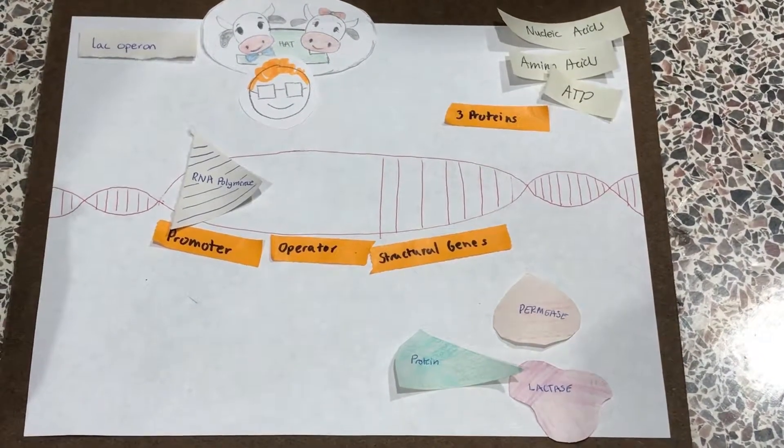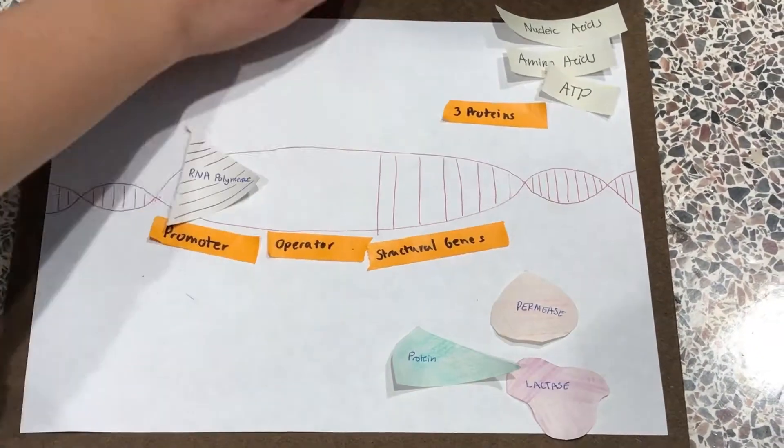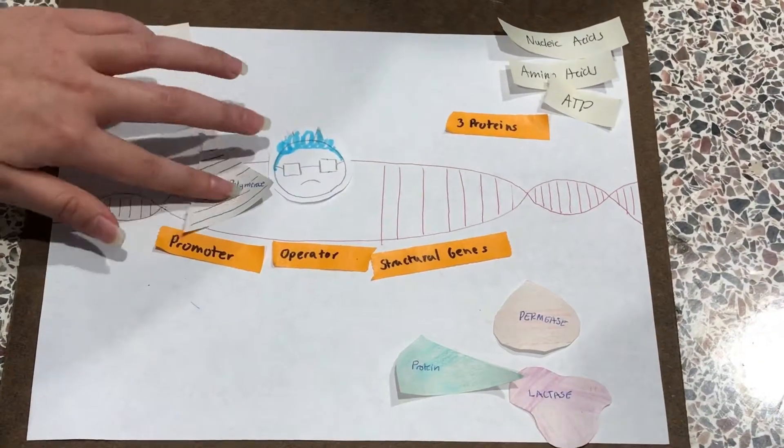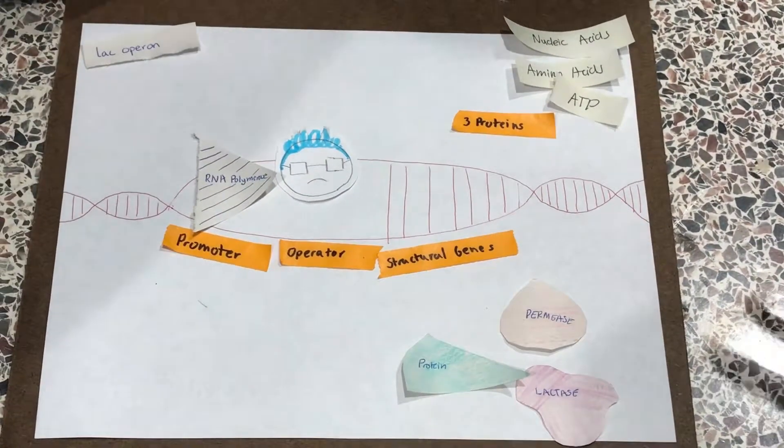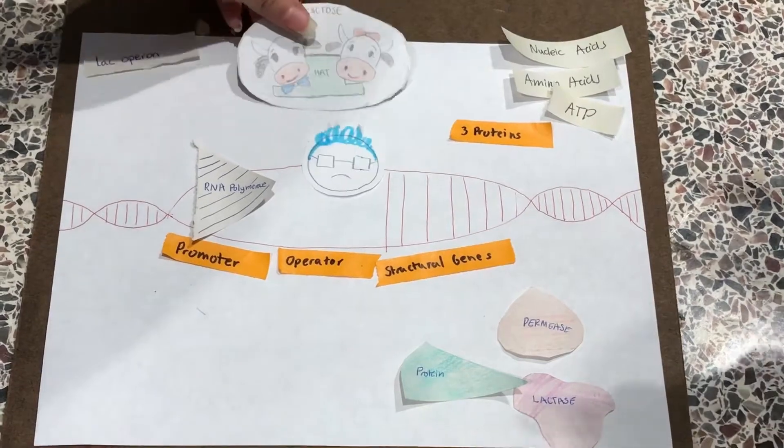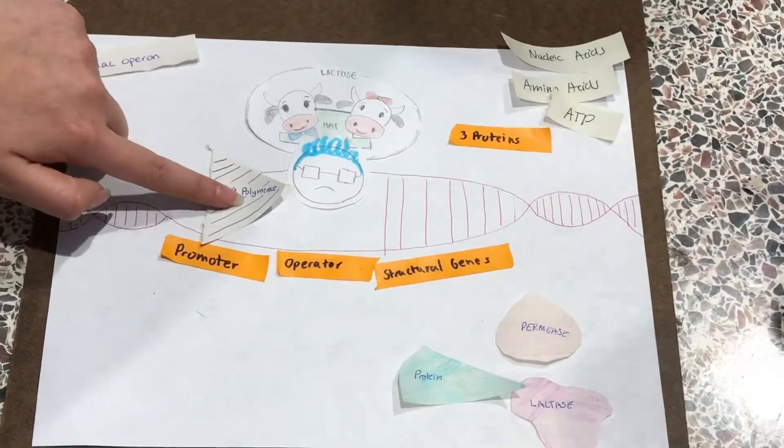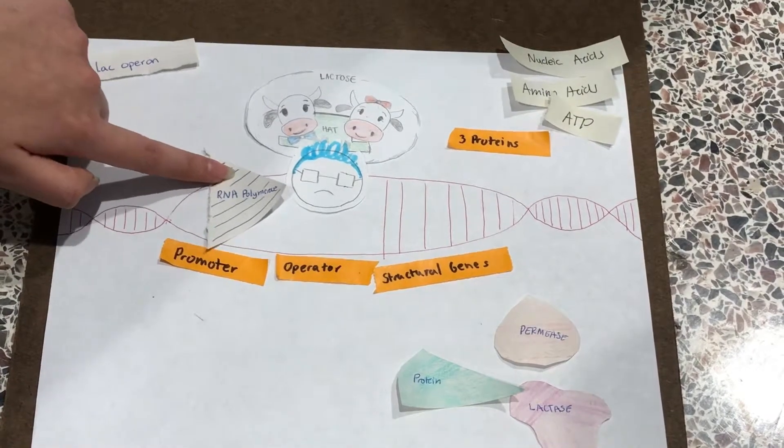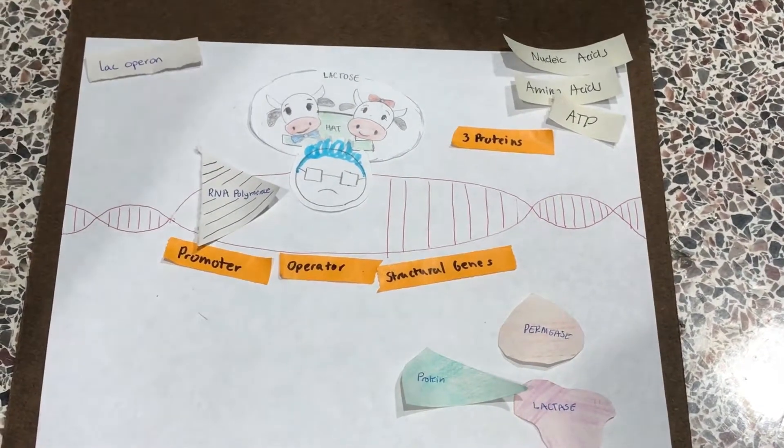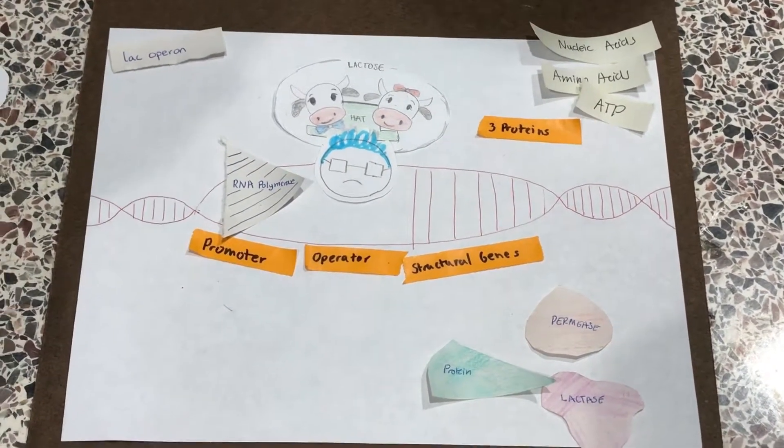Now what if there's a mutation in the active repressor? So let's take this first example. What if lactose is unable to bind to the active repressor because it has a mutation? Well, that means RNA polymerase will never be able to read those structural genes and create those three proteins.